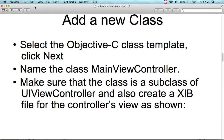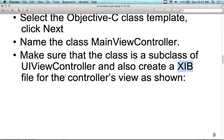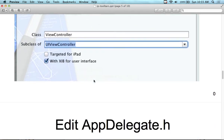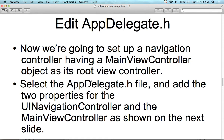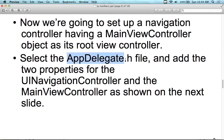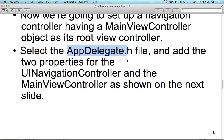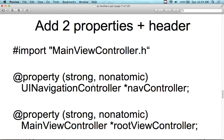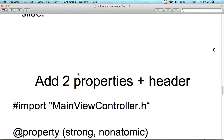Now we have to tell our app not to use the storyboard — we need to tell the app delegate to use our new XIB file. This is the key to getting your app to load whatever you put in there instead of the template default. We're going to set the navigation controller with the main view controller object as its root view controller. We'll add two properties to the app delegate .h file: a UINavigationController and a MainViewController.